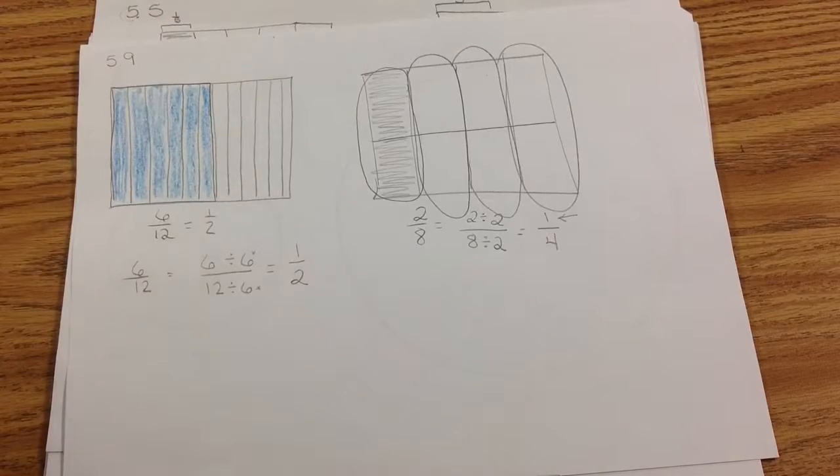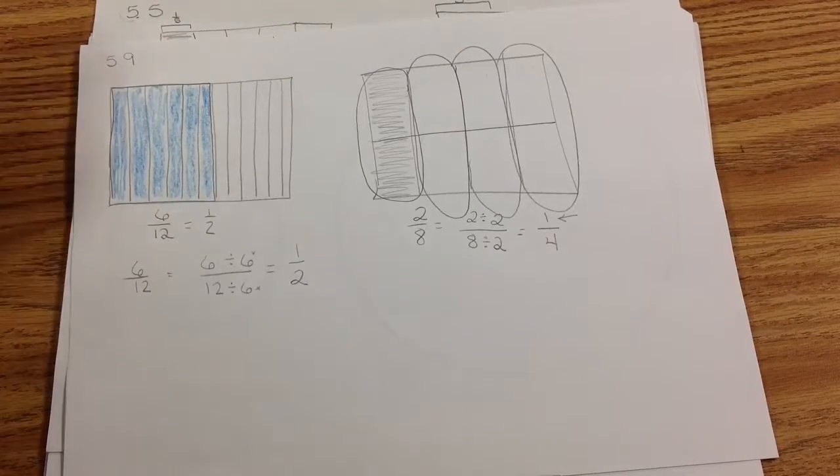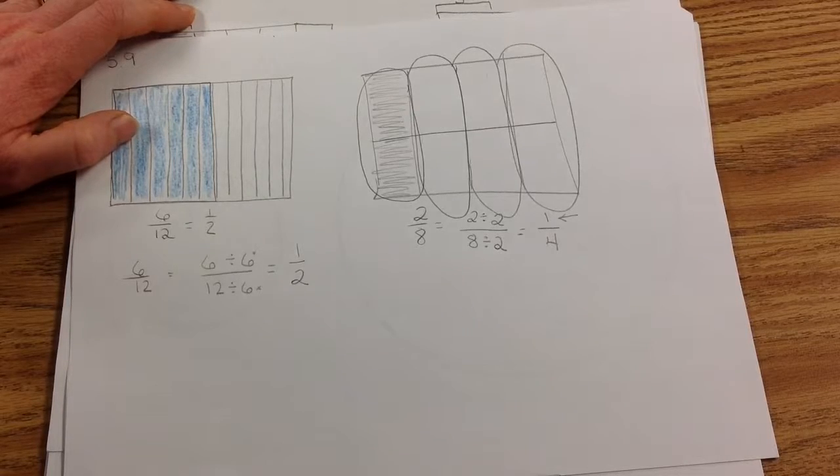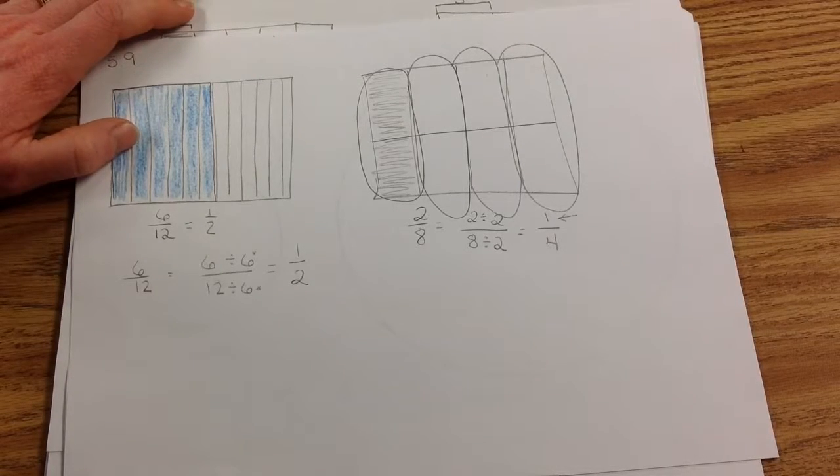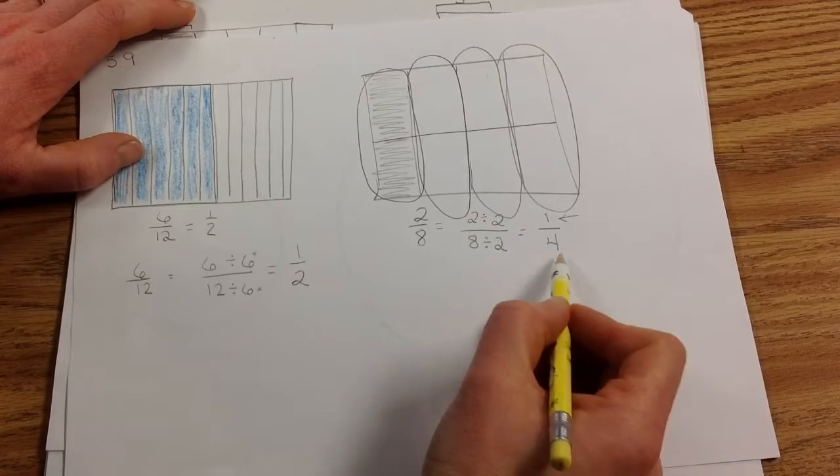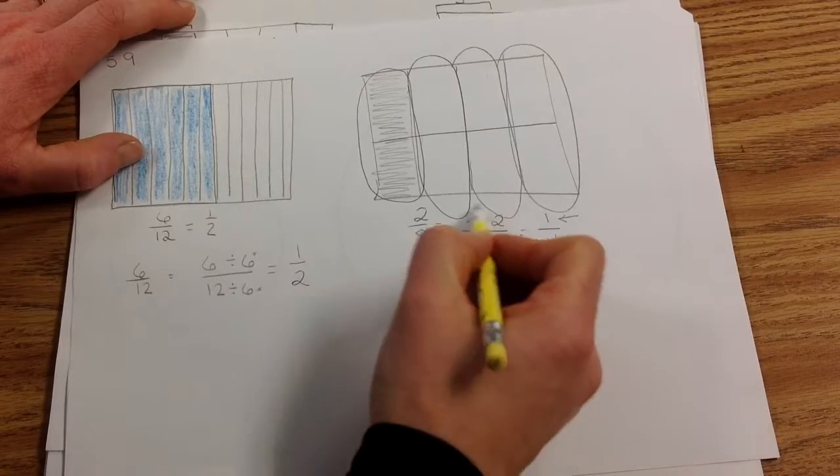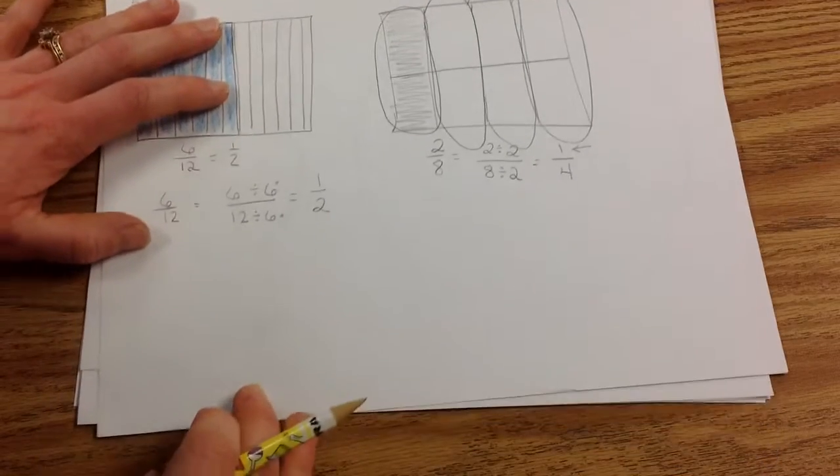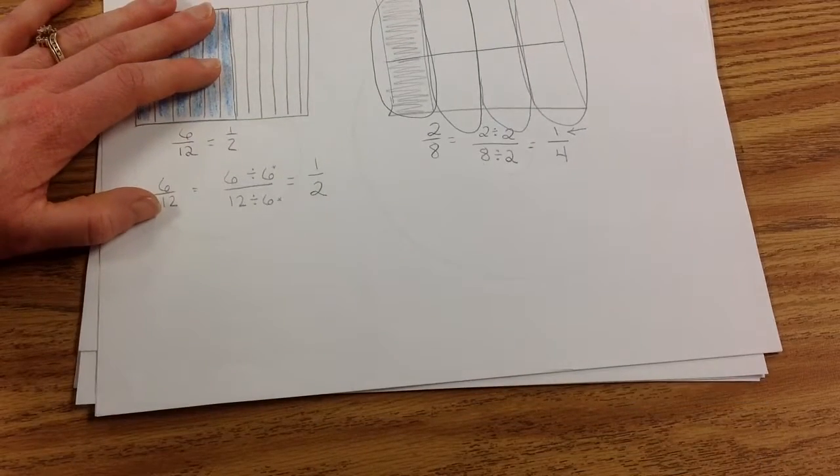This time I would like you to draw an area model that shows 3 twelfths shaded. And then see if you can figure out how to make an equivalent fraction. So something that it equals 2. See if you can figure this process out. If not, I will talk you through it. So make an area model 3 twelfths. Pause while you do that.